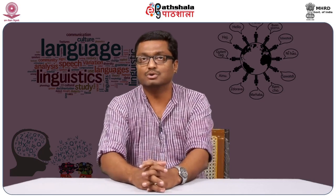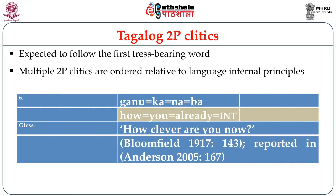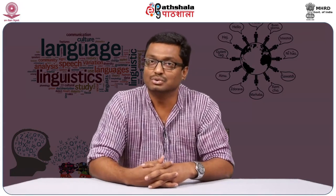Let us look at an example of 2P clitics from Tagalog, a language from the Philippines. In Tagalog, 2P clitics are expected to follow the first stress-bearing word. In the example 'Ganu ka na ba kakhinis?' meaning 'How clever are you now?', as soon as the first stress-bearing word 'ganu' ends, you find the 2P clitics. Interestingly, in Tagalog, 'ka', 'na', and 'ba' are all 2P clitics ordered in a particular way — when they appear together, they are also ordered according to language-internal principles.